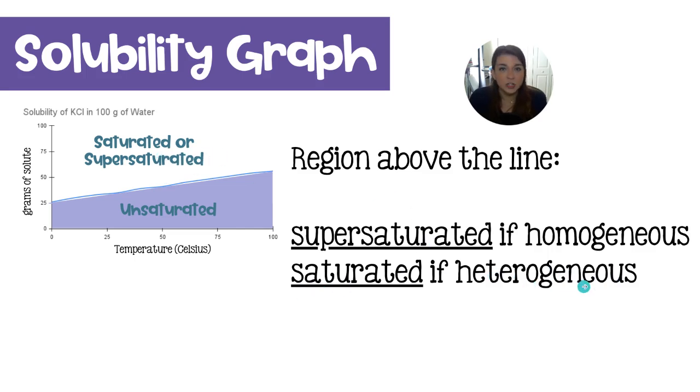So if my solution is heterogeneous, meaning I have some solids sitting on the bottom, that's going to represent the saturated solution. But if that solution looks homogeneous, it looks the same throughout, then that means that this solution had been heated quite a bit very quickly so that we could get some extra solute to dissolve. So that would represent the supersaturated KCl solution. So only if it is homogeneous above the line will that solution be considered supersaturated.